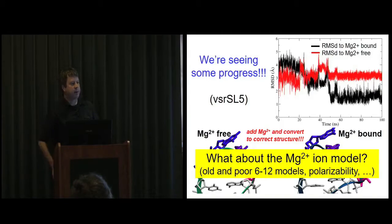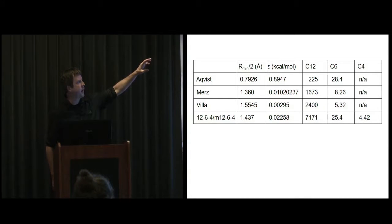Normally, when you talk about magnesium ions in simulations of atomistic simulations, people say they're terrible. We have these old and poor van der Waals models. We're not including polarization effects and really the performance should be terrible. We were surprised to see that they aren't so bad. We investigated a whole series of models. There's some new ones by the MERS lab and also Villa, the old ones by Akevist, and some new ones that we call the 1264 potential. It adds an inverse R to the fourth term to improve some of the charge interaction.